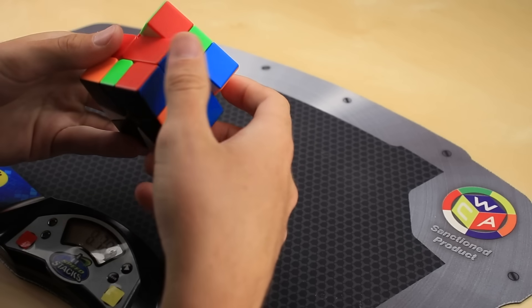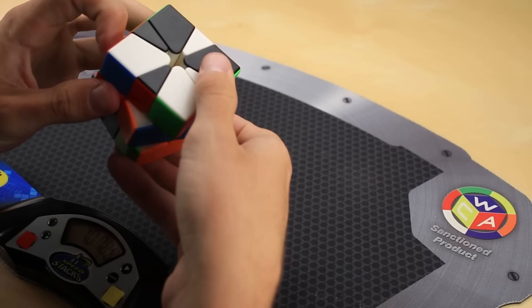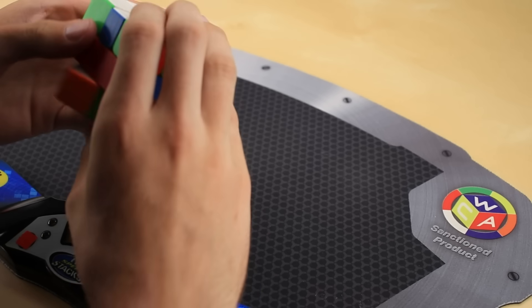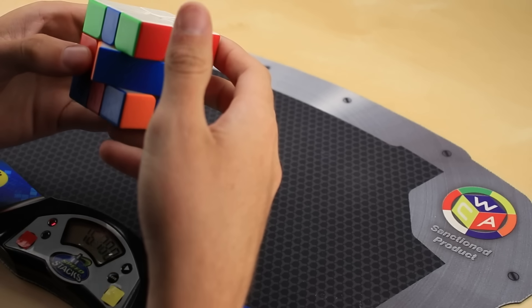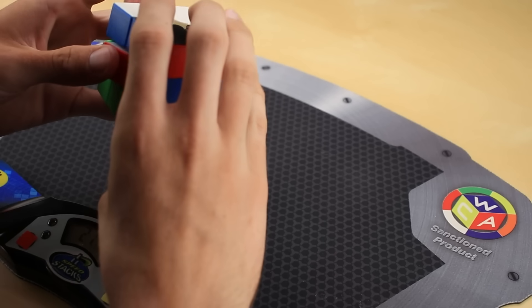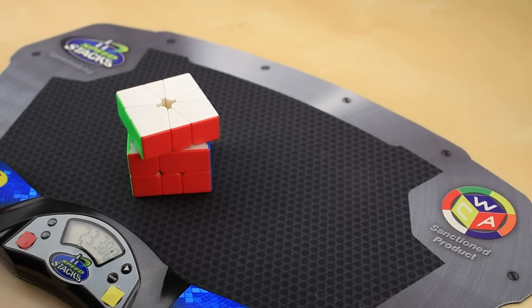Now, of course, the only thing that will significantly improve your square one times in the long term is, well, practicing more square one, which I have been doing a lot more recently than ever before. Hopefully, it shows in these solves. Now, of course, as with learning anything new, my recognition is pretty slow to begin with, but I like to think that my solutions and my turning are a whole lot more efficient than they were before.